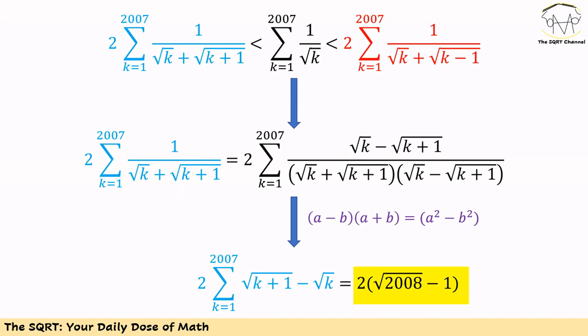Let's start to do this. 1 over (√k + √(k+1)) can be written as √(k+1) minus √k. To prove this, just multiply top and bottom by √k minus √(k+1) and then use the identity (a minus b)(a plus b) equals a squared minus b squared. At the end, we have a telescoping series.